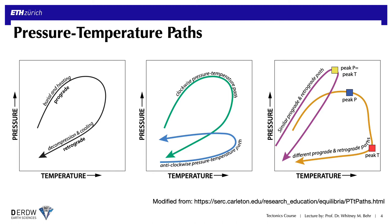Focusing now on the right-hand diagram, the purple curve and yellow square shows an example of a coincident peak pressure and peak temperature point. This curve also shows a very similar prograde and retrograde pressure-temperature path. This is a common PT path seen in subduction zones where subducted material is exhumed close to the slab itself, so it remains refrigerated.